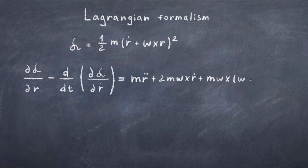Notice that this equation of motion is almost identical to the Newtonian result. The only difference is that in the Newtonian case the result equals the force, while in the Lagrangian case it equals zero. This is because in Newtonian physics you stand at a point and watch something move relative to a stationary observation point based on the forces applied, whereas in Lagrangian physics you are the something moving that experiences the forces.